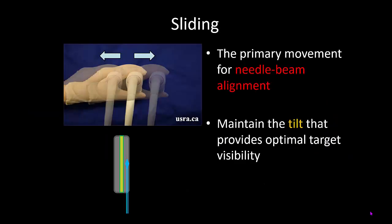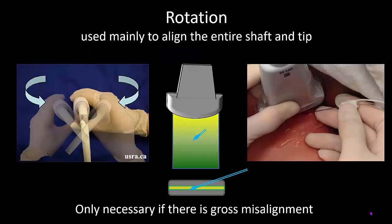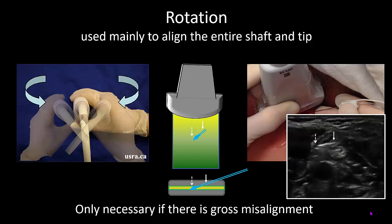The primary movement for needle-beam alignment should be sliding. This allows the very fine micro-movements that are needed to align two structures that are only millimeters wide. While sliding, it is important to maintain the tilt that provides optimal target visibility. Rotation is a movement that is only used if there is gross misalignment of the needle and probe. You don't have to visualize the entire shaft — as long as you can see and identify the tip, this will be sufficient for safe needling.